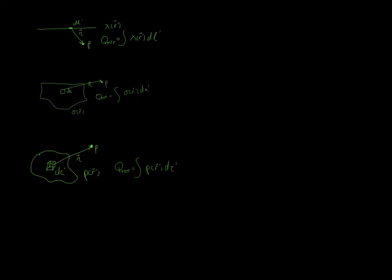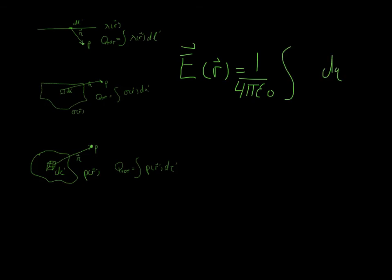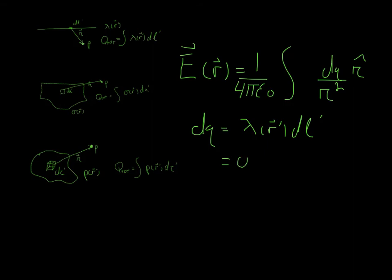If we want to get the electric field at P for these distributions, here's Coulomb's Law generically for each of them. It's a function of our vector from the origin to the point of interest, with the scaling factor 1 over 4 pi E naught, and it's the sum of all the bits of charge with an R squared dependence, keeping track of direction. DQ equals lambda DL for a line charge, sigma DA for a surface charge, and rho D tau for a volume charge.